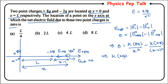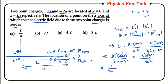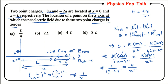k times 2q divided by (x minus l) squared equals k times 8q divided by x squared. The k and q terms cancel, giving 1 divided by (x minus l) squared equals 4 divided by x squared, or equivalently 1 divided by (x minus l) equals 2 divided by x. Cross-multiplying: x equals 2x minus 2l, which gives x equals 2l. Therefore option B is the correct answer.